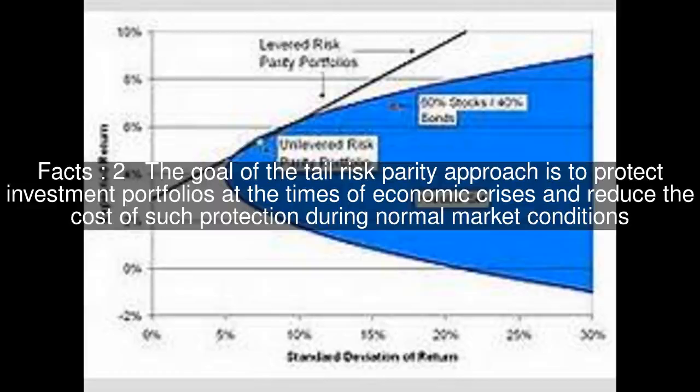Tail risk parity is an extension of the risk parity concept that takes into account the behavior of the portfolio components during tail risk events. The goal of the tail risk parity approach is to protect investment portfolios at the times of economic crises and reduce the cost of such protection during normal market conditions.